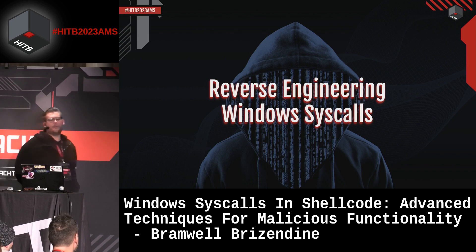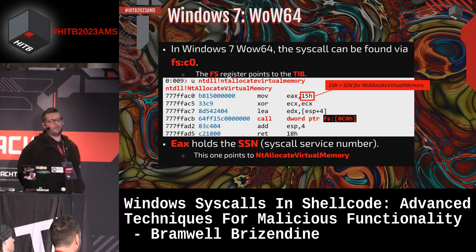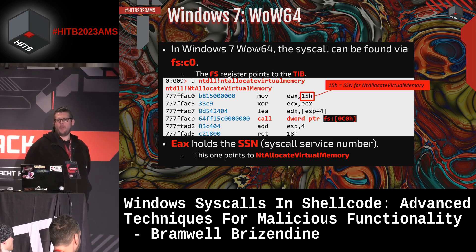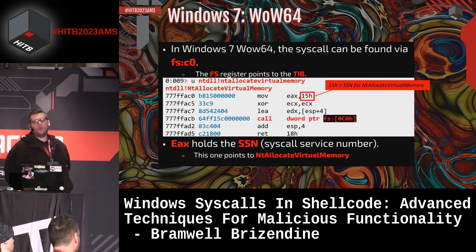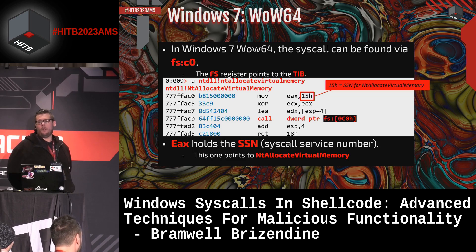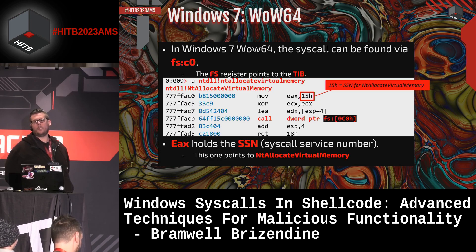Let's get into reverse engineering Windows syscalls. This isn't meant to be an exhaustive study on every aspect of WoW64 — it's primarily the research I did to make this work in a Windows syscall shellcode environment. On Windows 7 WoW64, looking at the NTDLL function for NT Allocate Virtual Memory: hex 0x15 is moved into EAX, ECX is zeroed with XOR, ESP+4 is loaded into EDX via LEA, and there's some stack cleanup. Most importantly, we see CALL DWORD FS:[0xC0] — that is our primary interface in WoW64 for invoking the syscall.